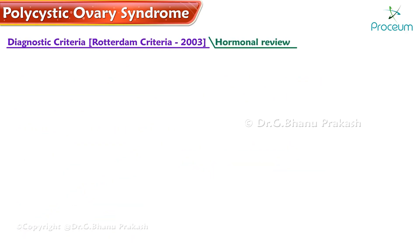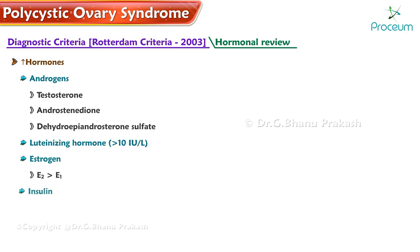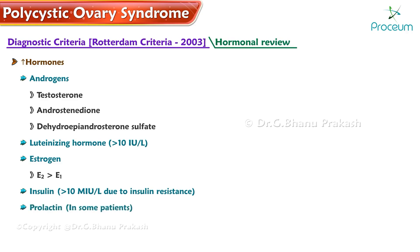Hormones that are increased include: androgens — testosterone, androstenedione, and dehydroepiandrosterone sulfate (DHEAS); luteinizing hormone greater than 10 IU/L; estrogen, with estrone greater than estradiol; insulin greater than 10 mIU/L due to insulin resistance; increased prolactin in some patients; and increased LDL cholesterol and triglycerides.